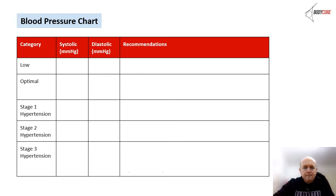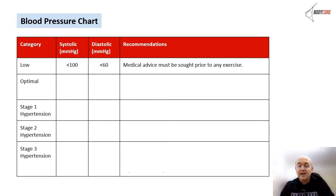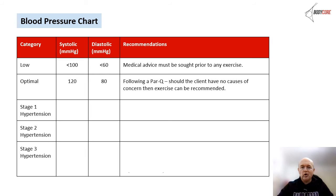The blood pressure chart is available in your online manuals. Low blood pressure is a systolic below 100 and diastolic below 60 — seek medical advice before starting any exercise. Optimal blood pressure is 120 over 80 — though this increases with age, it's what you'd want to see on a PAR-Q. Stage one hypertension is anything above 140 systolic — anything over 90 diastolic means you must refer the person to get checked.